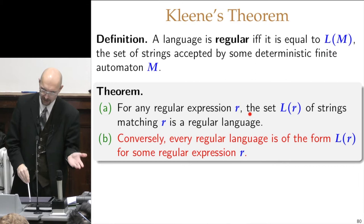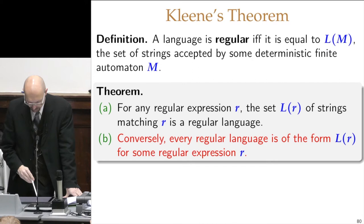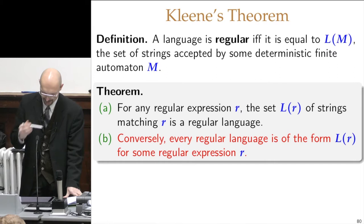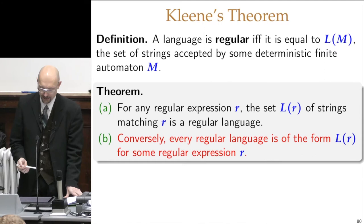The second half of Kleene's theorem: we've gone from regular expression to DFA, actually to NFA, but then we know how to build the DFA from NFA. And now we want to do the reverse. Every regular language, which means every finite state machine, corresponds to a regular expression.